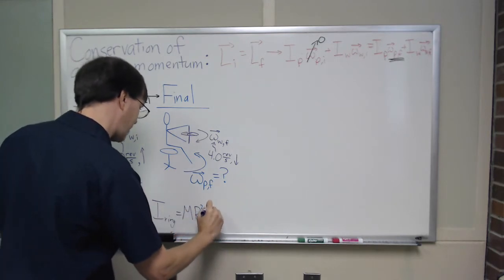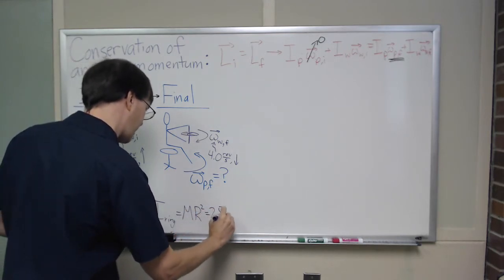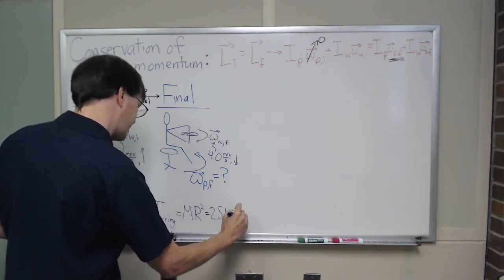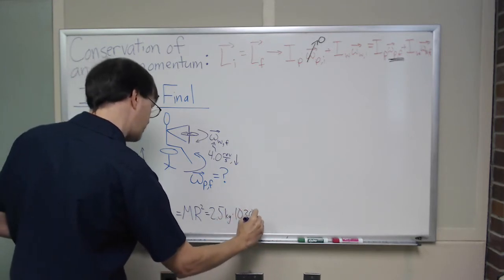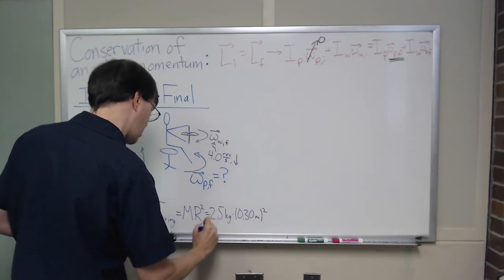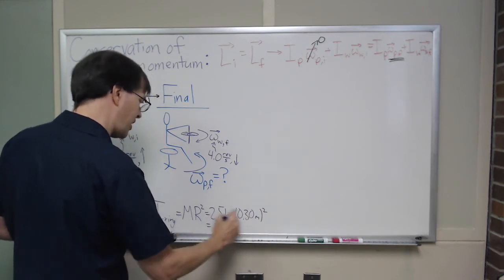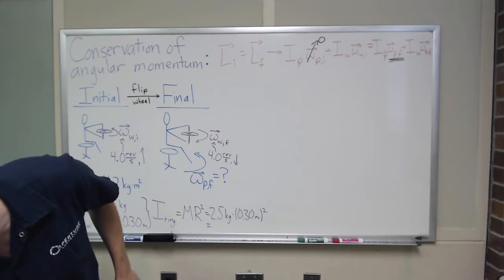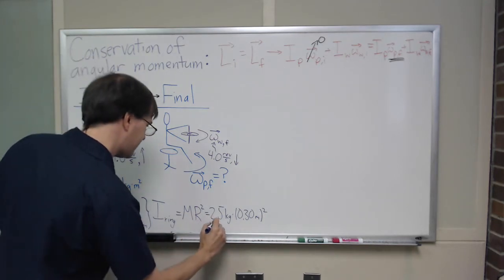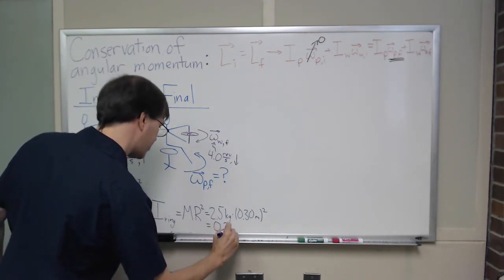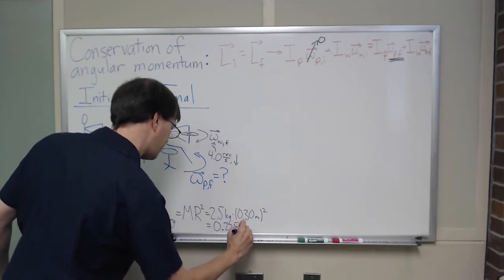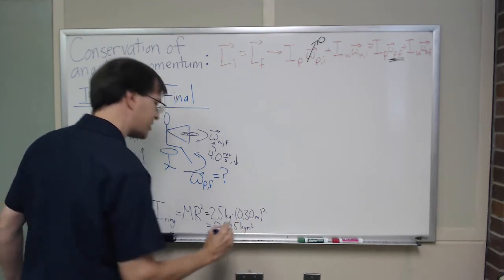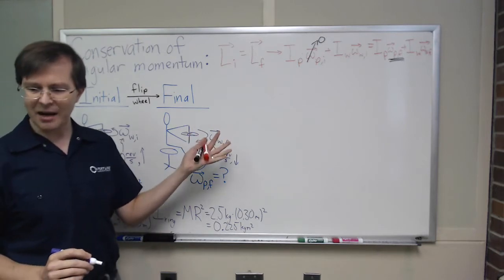So all right, what's this come out to be? 2.5 kilograms times 0.30 meters squared. When I put that together, this is 0.09 times 2.5. When I put those together, I find that I get 0.225 kilogram meter squared. So okay, that's my setup for this.